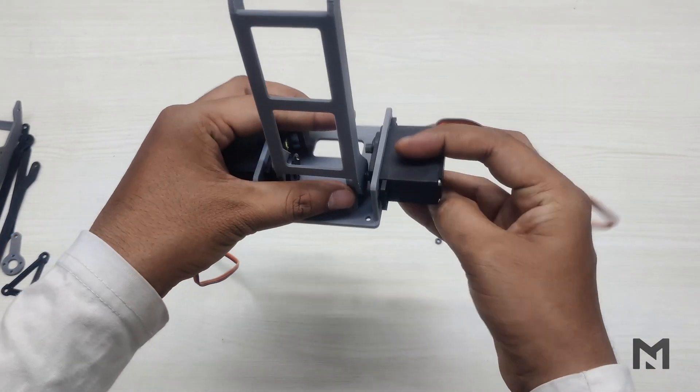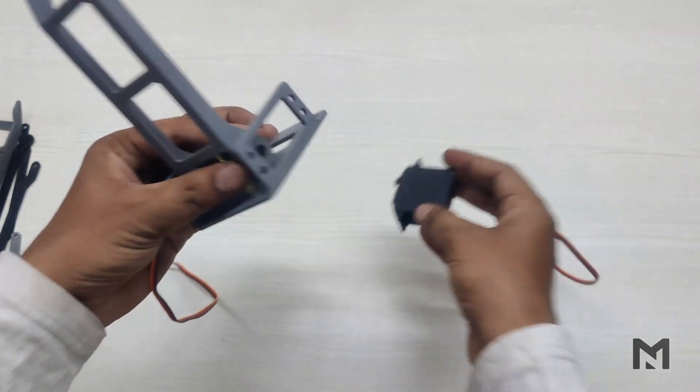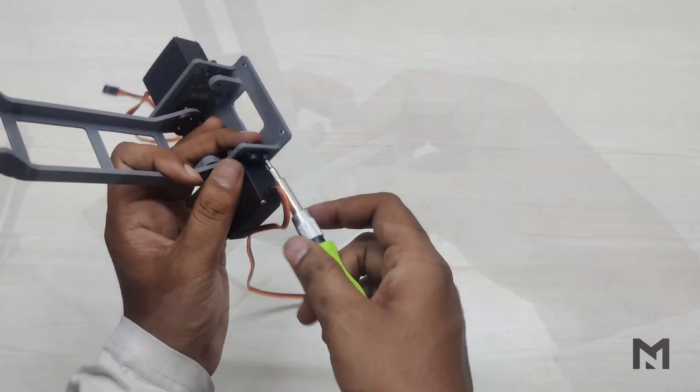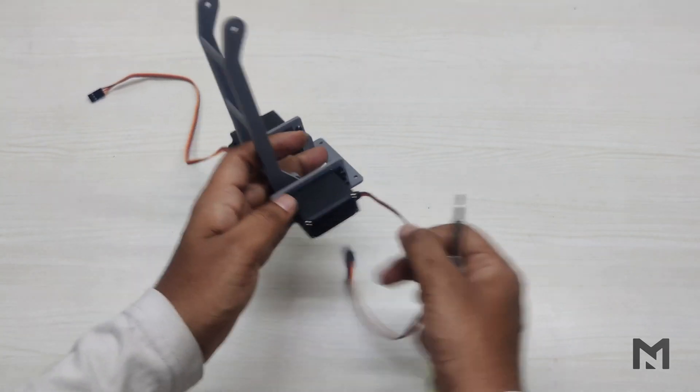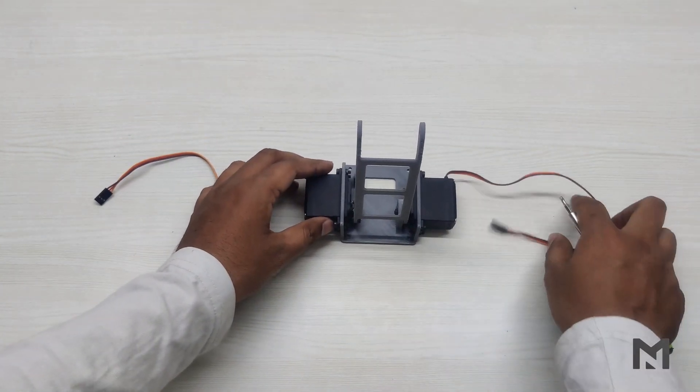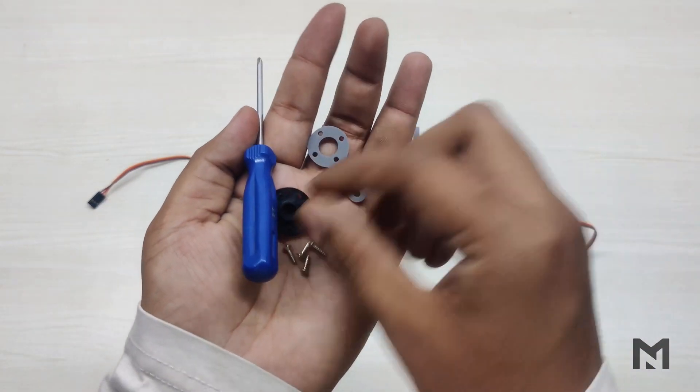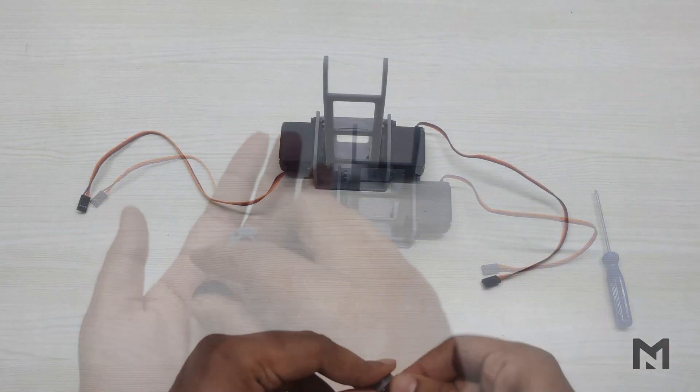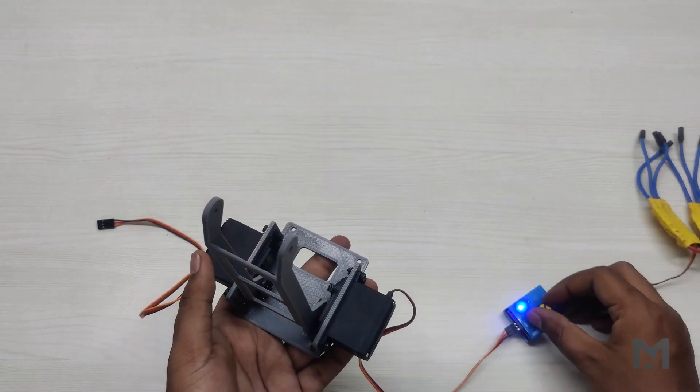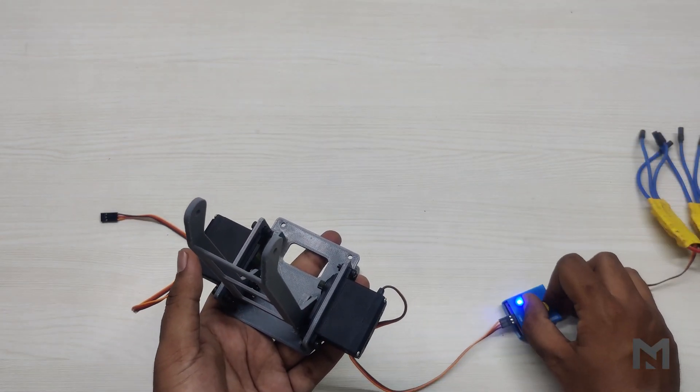Attach the other servo and check if the bolt is obstructing the servo. If so then use a flatbed screw. Now attach the other servo with screws. Its orientation is opposite to that of the first servo. Now take the round servo arm and attach it to a 3D printed arm using 4 screws of 2mm diameter.